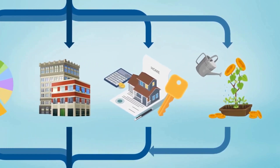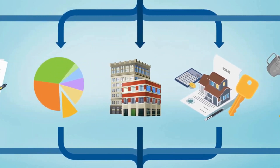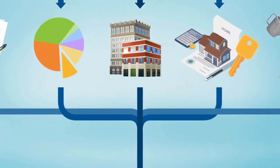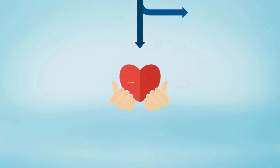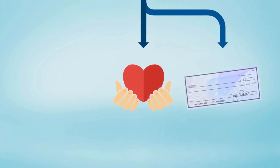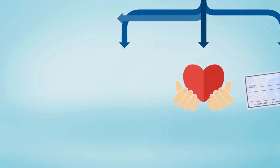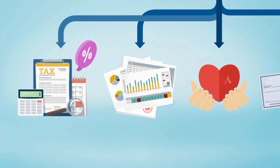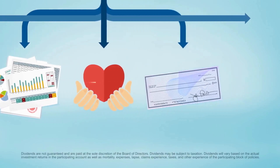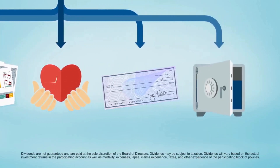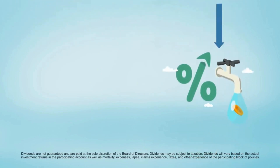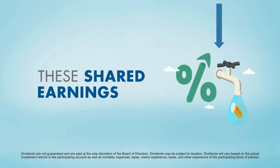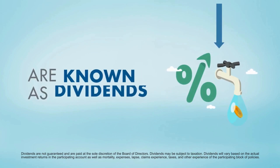Over time, the money invested in the PAR account can grow. The money in the PAR account pays for a lot of things that have to do with PAR policies. Some include paying out death benefits or withdrawals for whole life participating policyholders. The insurance company can also contribute part of the funds to its surplus account, which is used to help run the company. Based on the account's performance and the dividend policy, the company also decides how much of the earnings get shared with participating policyholders. These shared earnings are known as dividends.